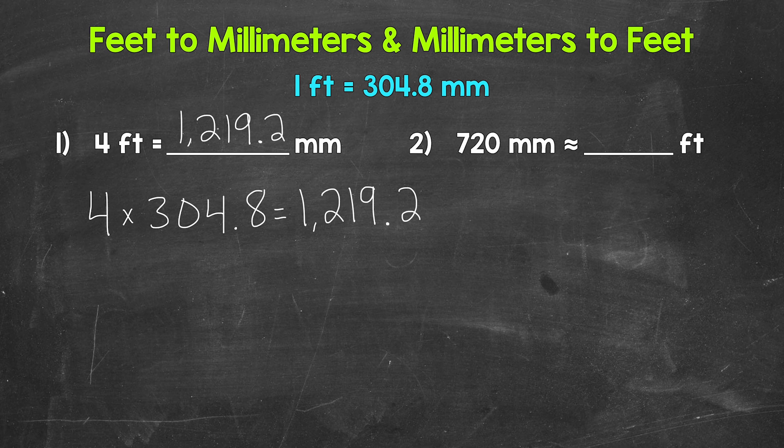As far as millimeters to feet, each group of 304.8 millimeters equals a foot. So how many groups of 304.8 millimeters in 720 millimeters? We need to do 720 divided by 304.8.